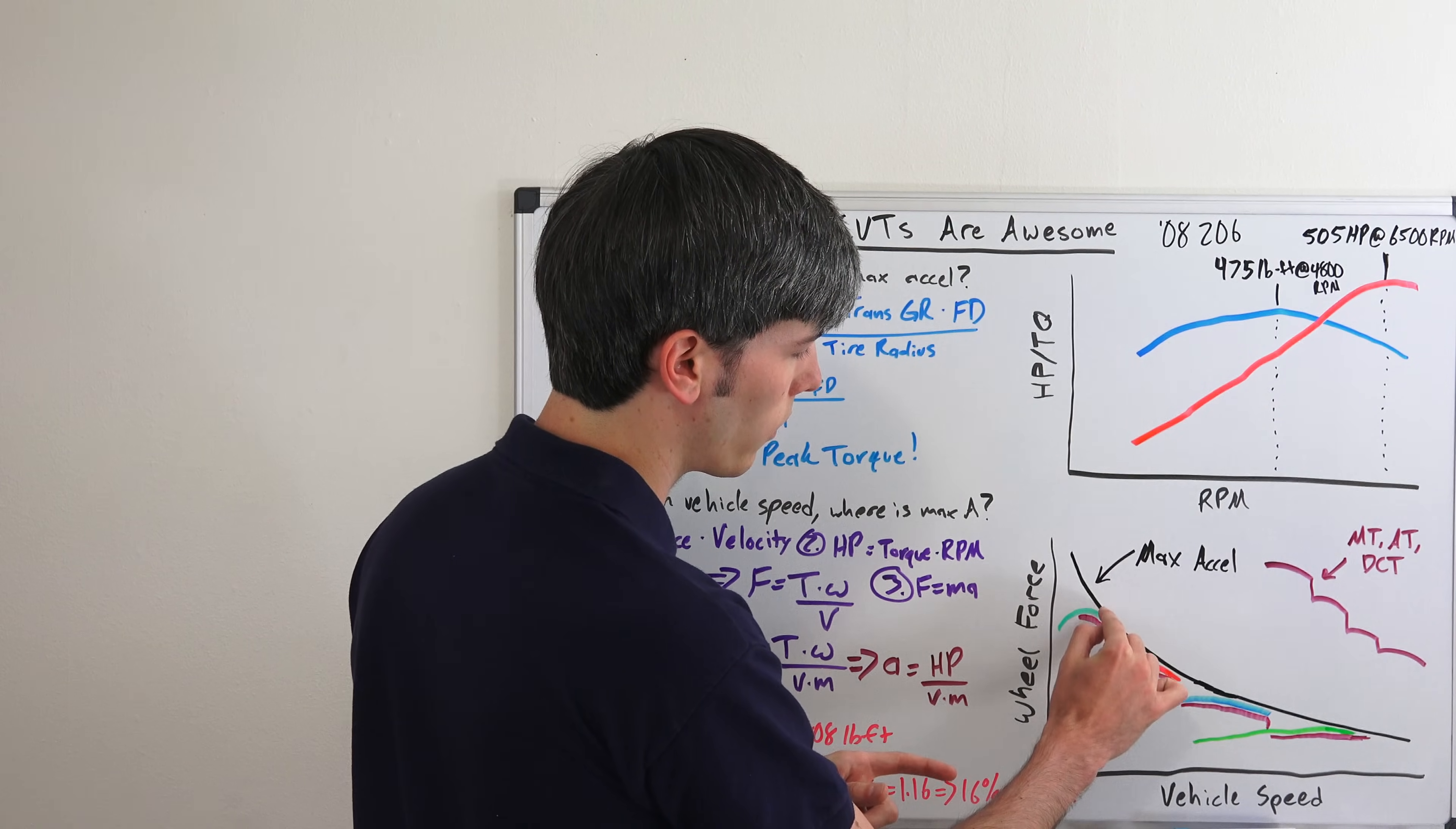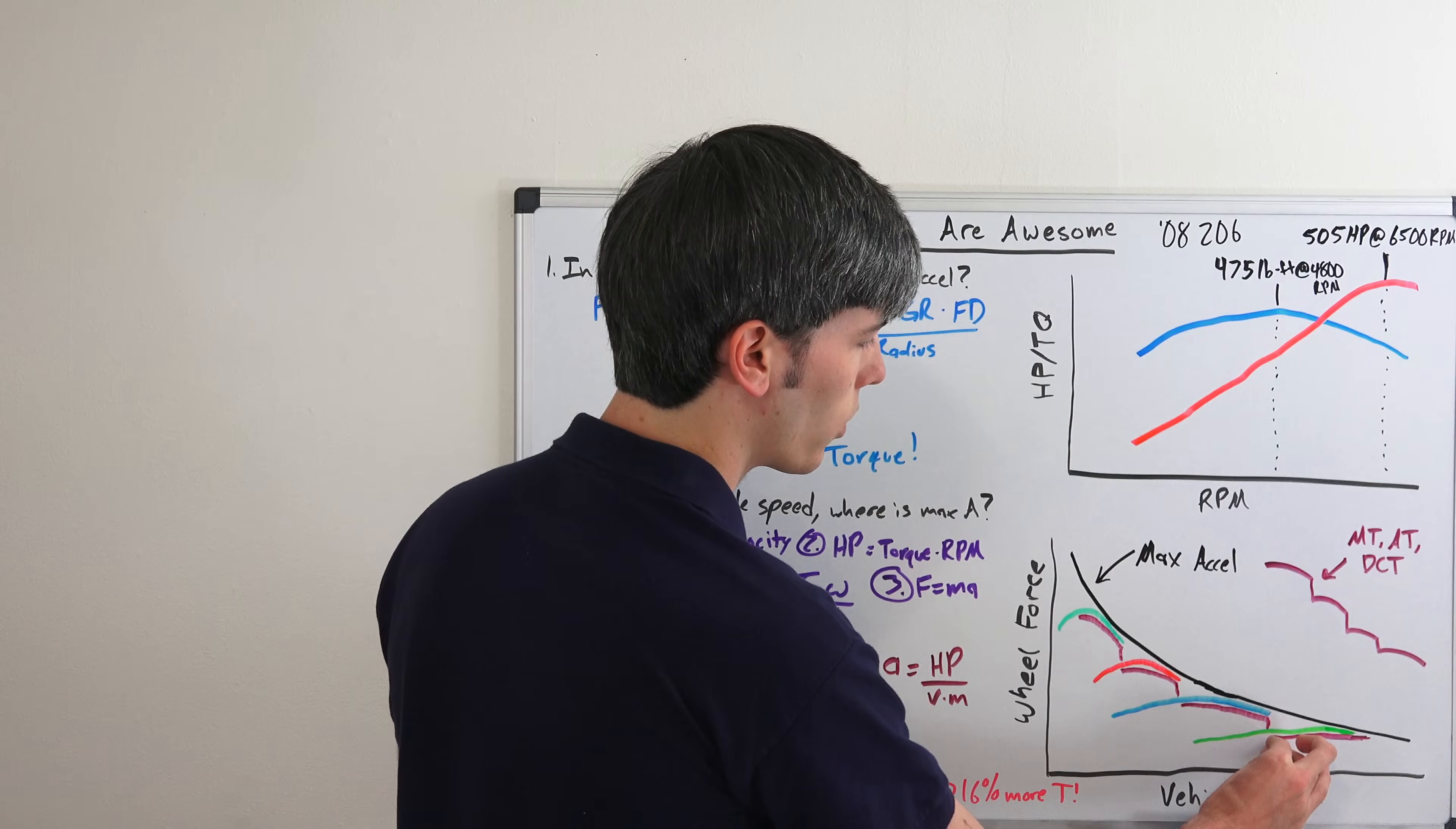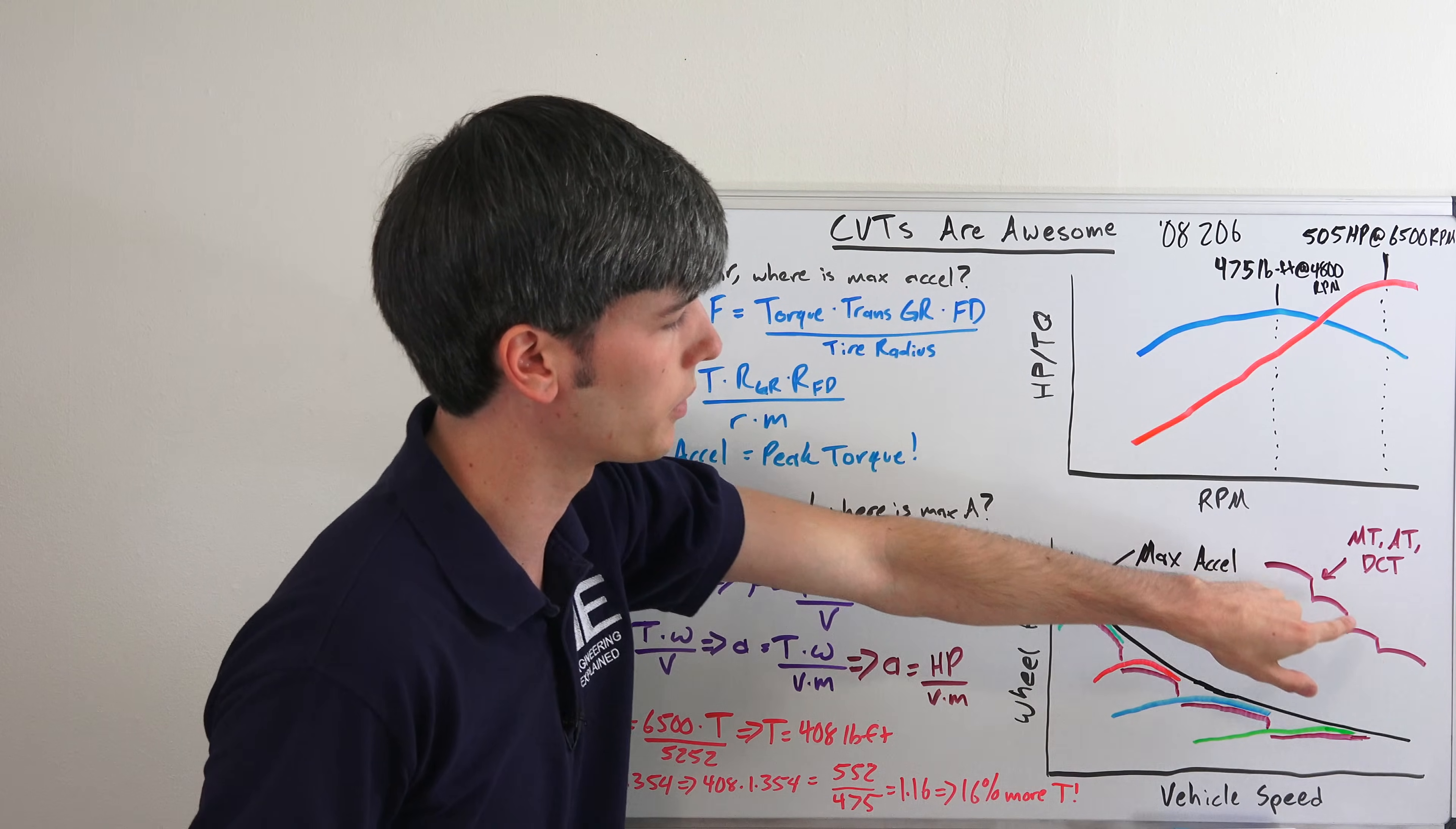So your wheel torque is gonna drop and then you're gonna go over here. And then you're gonna drop it as you go into third gear, and then you'll start to follow the curve again, drop as you go into fourth gear, start to follow the curve again. And so a manual transmission, an automatic transmission, a dual clutch transmission, anything with gears - you're gonna have this step where you lose a bunch of wheel torque instead of following the ideal curve.